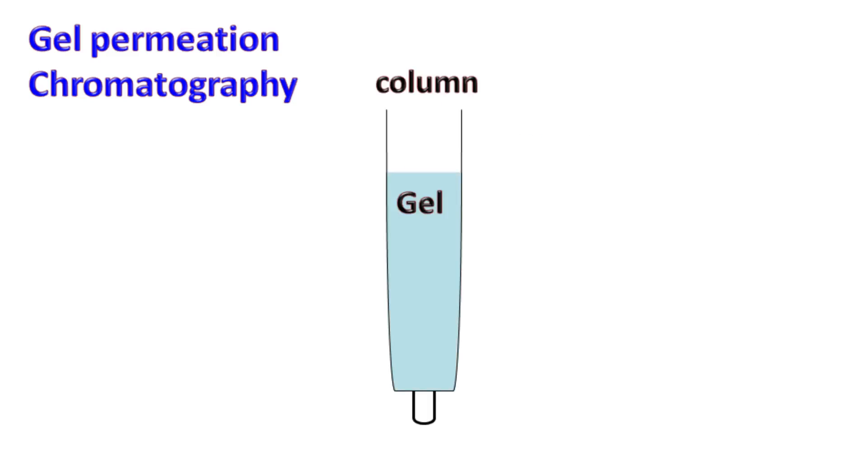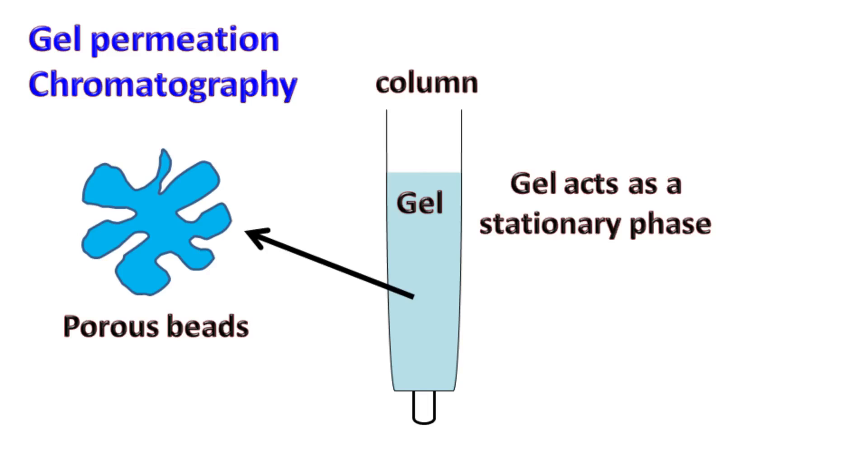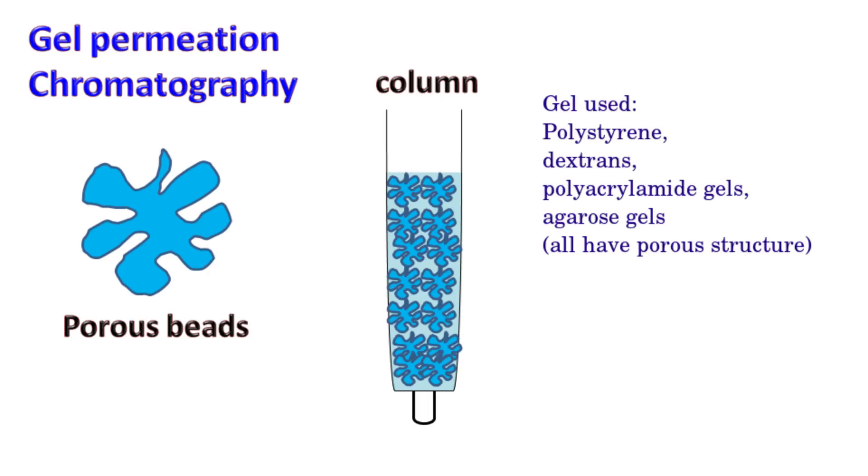In this technique, the column is filled with a gel which acts as a stationary phase. The gel is made up of porous beads. Polyacrylamide, dextran, agarose, etc. can be used as a stationary phase.